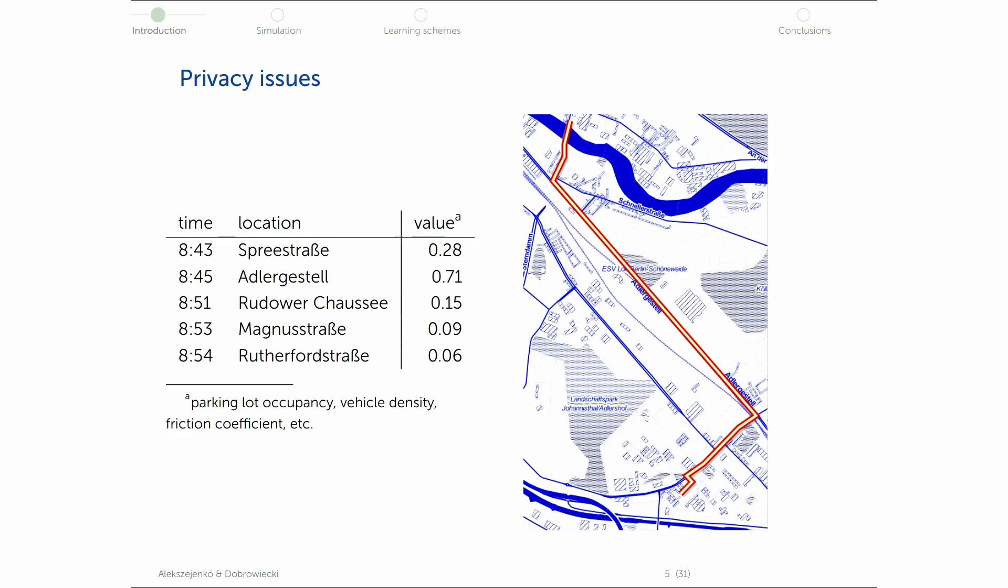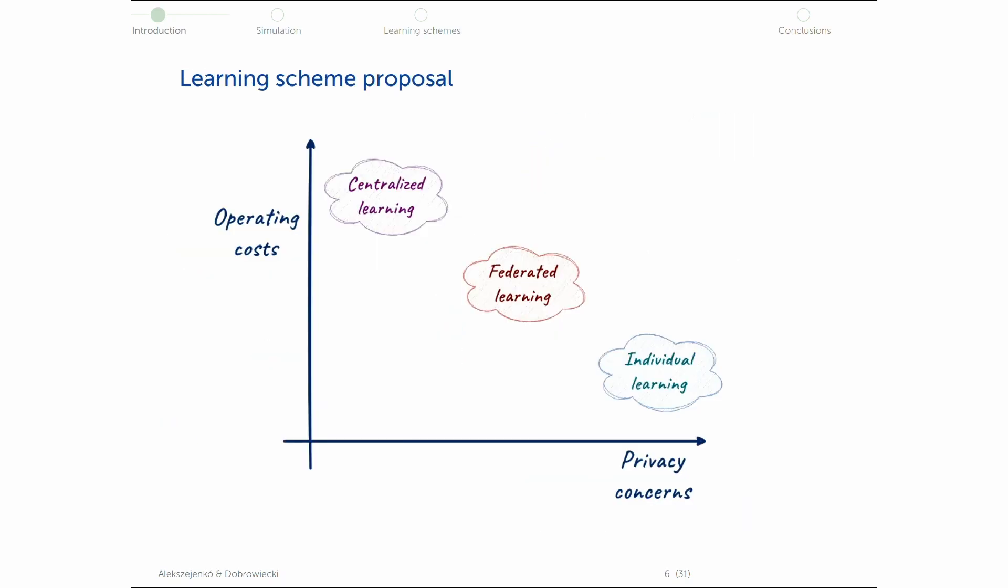So let's reason about it. I guess there is a trade-off between operating costs and privacy concerns. Operating costs are very high if the learning is made on a centralized basis as we considered a couple of minutes ago. There are a lot of sensors, a lot of data, we have to process it, we have to transfer it over the network. So it must be very expensive to do so.